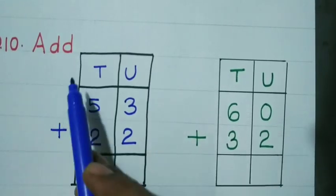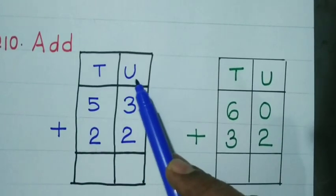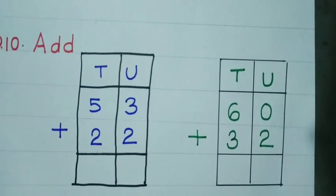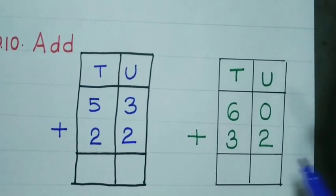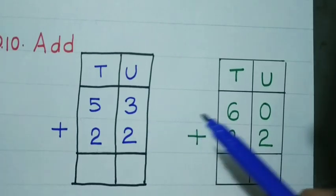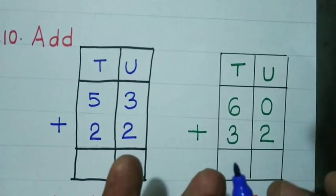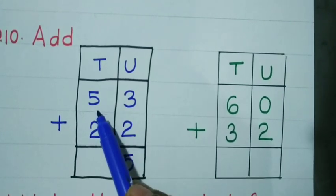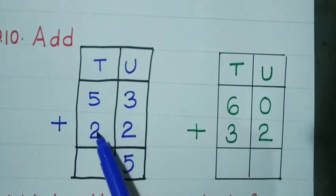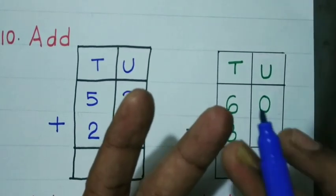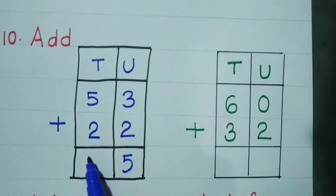Question number 10: Add. Always begin addition from the units place. Units: 3 plus 2 — keep 3 in mind and add 2: 4, 5. Tens: 5 tens plus 2 tens — keep 5 tens in mind and show two fingers: 6 tens, 7 tens. So 75 is the answer.